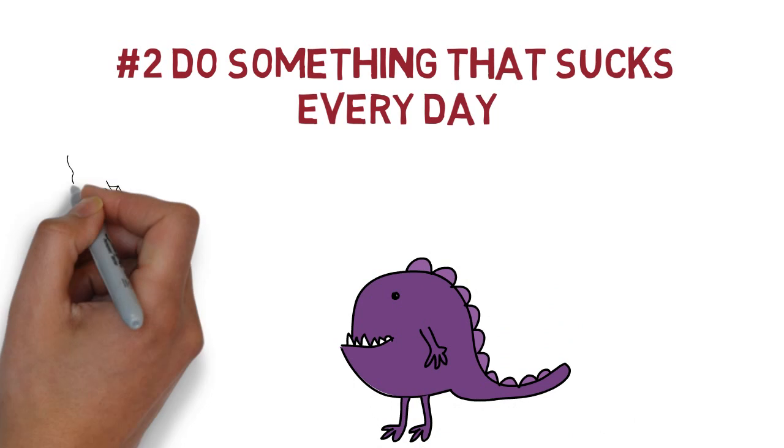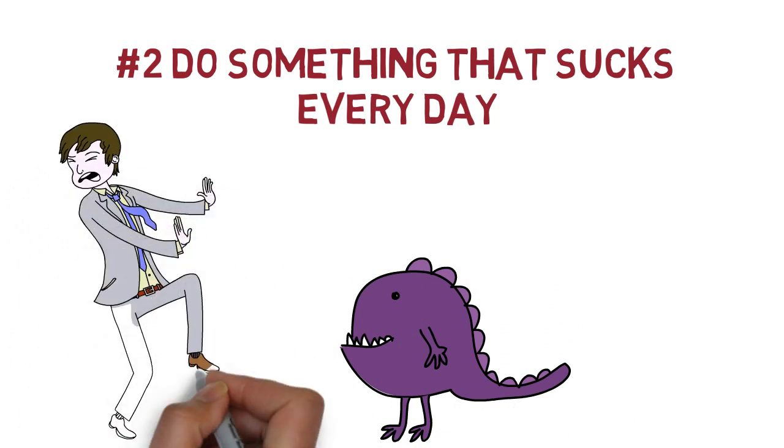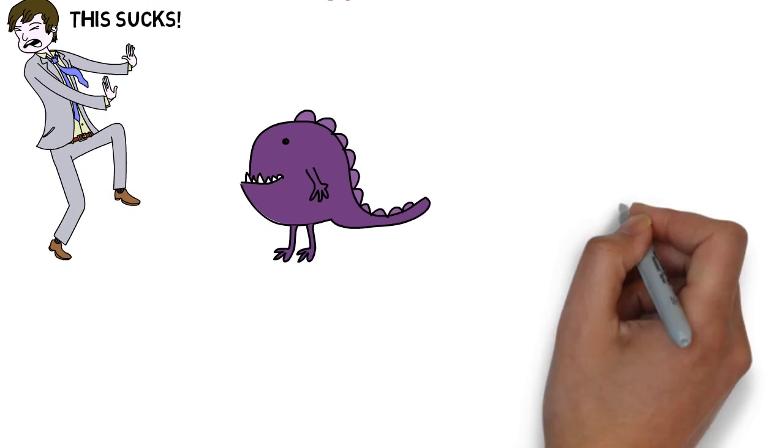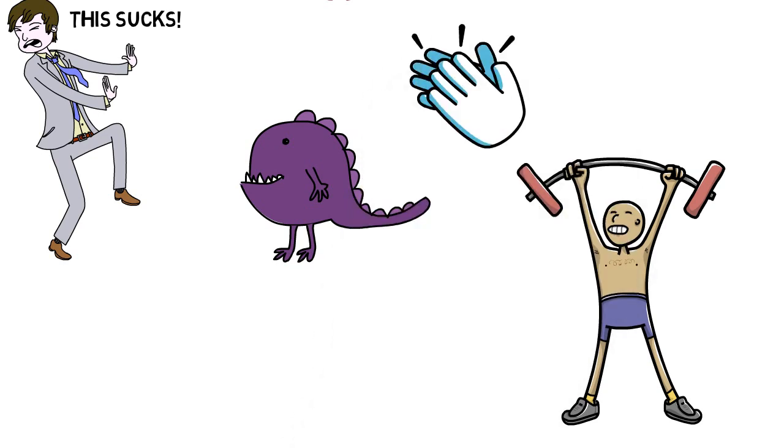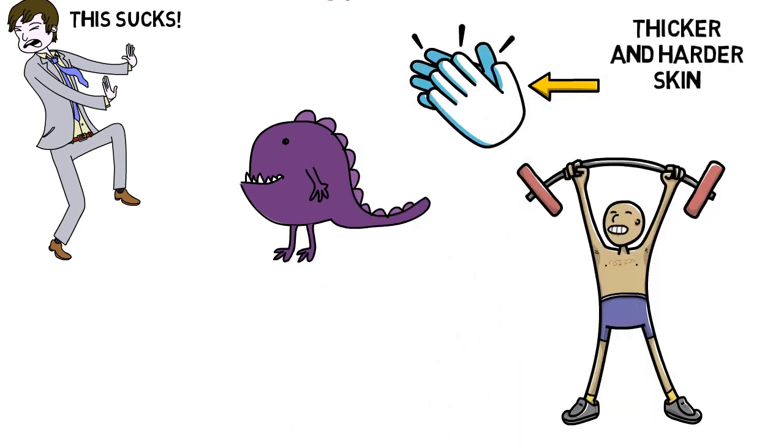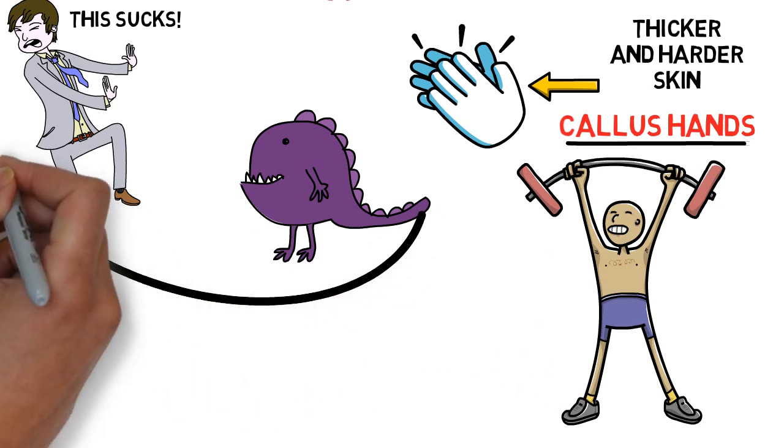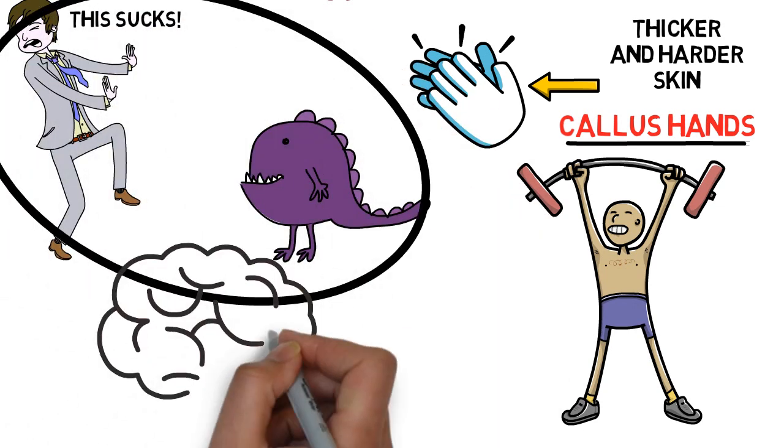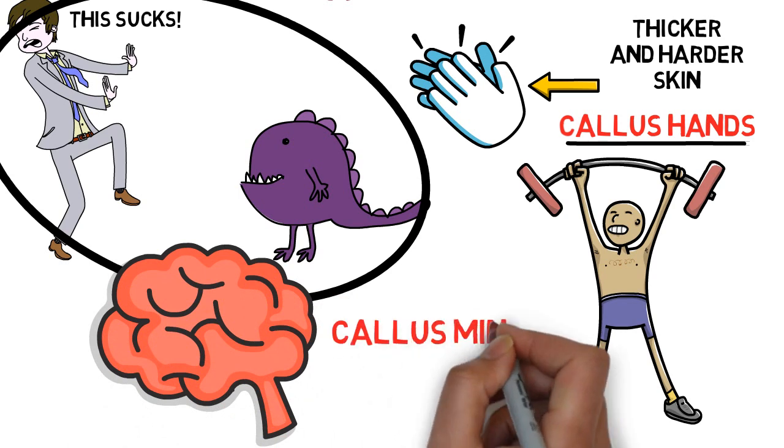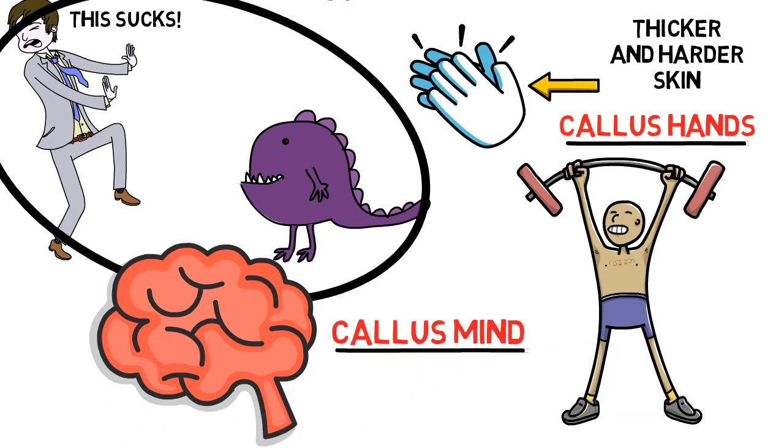Yeah, so this is something David Goggins preaches as well and I have to agree with him. You know how lifting weights gives you thicker and harder skin? You get callous hands. Well, David used to say that if you do something to push yourself through uncomfortable situations, you develop a callous mind as well.